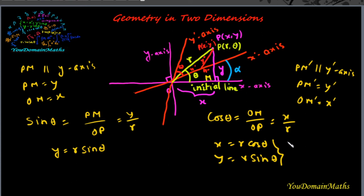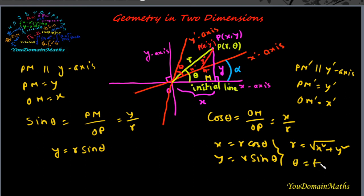This can also be written in another form: r = √(x² + y²) and θ = tan⁻¹(y / x).